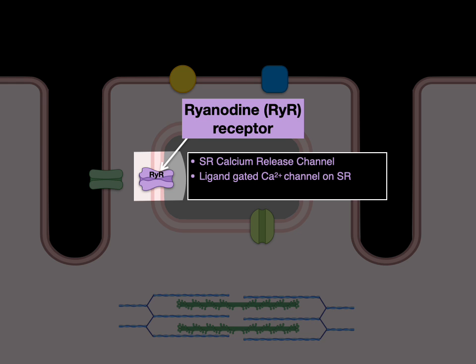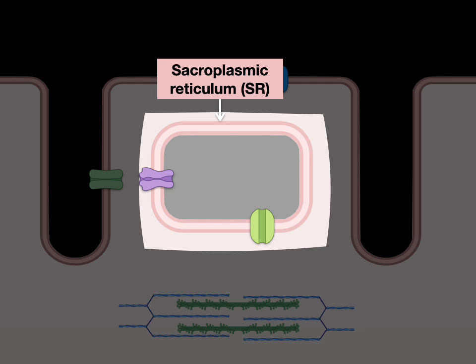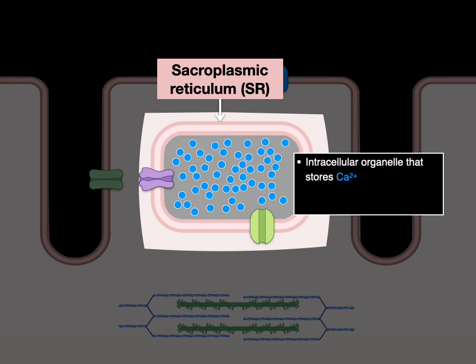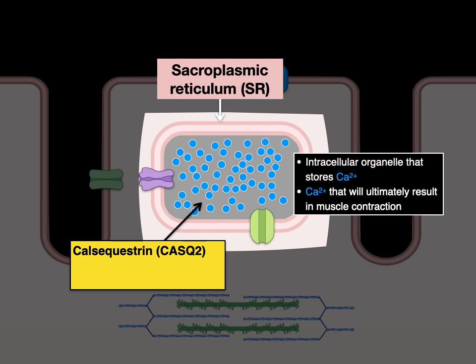The ryanodine receptor is a ligand-gated calcium channel on the SR. The ligand is calcium that, when it binds to the ryanodine receptor, opens it and releases a lot of calcium from the SR into the cytoplasm. The sarcoplasmic reticulum, or SR, is an intracellular organelle that stores calcium — calcium that will ultimately result in heart muscle contraction. Within the SR is calsequestrin, a calcium-binding protein that allows the SR to store a high concentration of calcium.